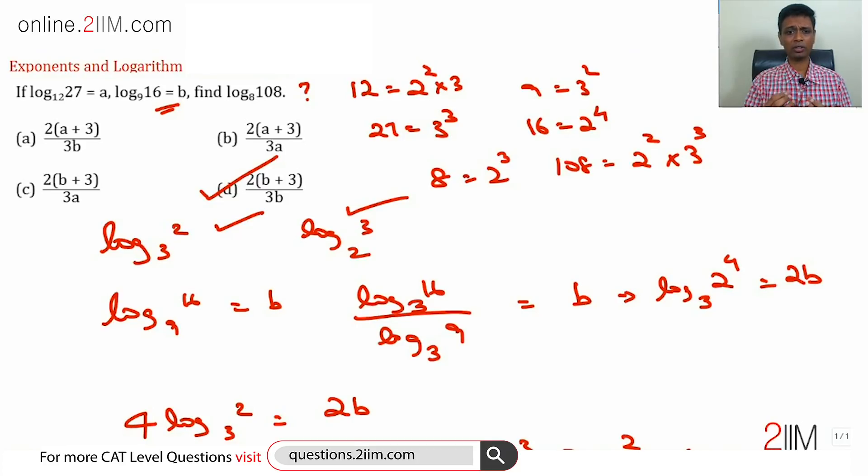So anchor your question around finding that log 3 to the base 2 or log 2 to the base 3. Find that underlying entity, everything else can be worked around based on that.